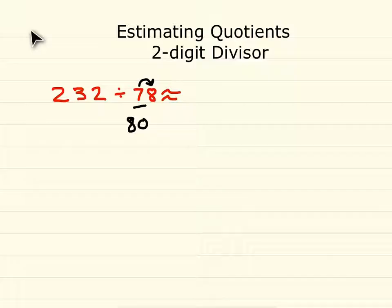Now we need to look at the 8 in the tens place of our divisor, and find a number that is close to 230 or 232 but divisible by 8. This problem is easiest by looking at just that 23 part and figuring out what number is close to 23 but divisible by 8, and then changing that back into the number with zeros.